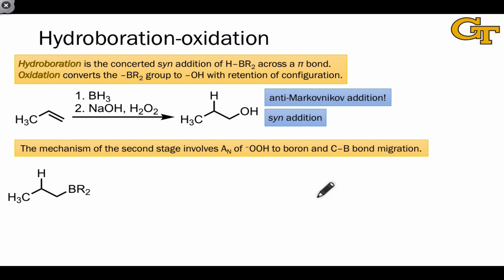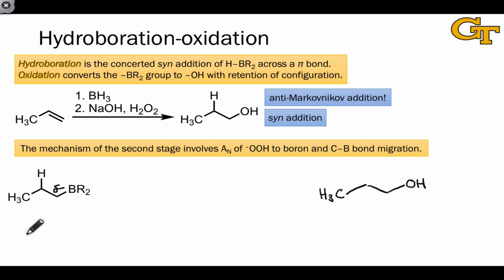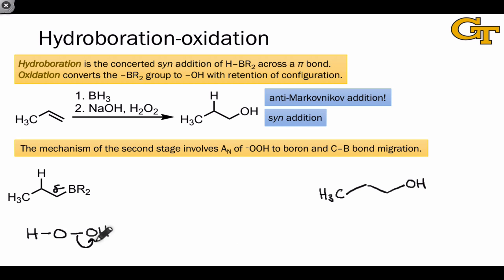If only we could transform that BH2 group into an OH group, we'll have achieved anti-Markovnikov hydration. In the second stage, the BR2 group—where H has been replaced with R, recognizing that the other two B–H bonds can also engage in hydroboration—is replaced with a hydroxyl group. This is done by treatment with sodium hydroxide, a strong base, and hydrogen peroxide. To understand how these conditions supply an electrophilic source of oxygen, it's worth considering hydrogen peroxide: just as in electrophilic halogenation where one halogen atom can depart with a pair of electrons leaving the other electrophilic, a similar situation can occur in hydrogen peroxide.